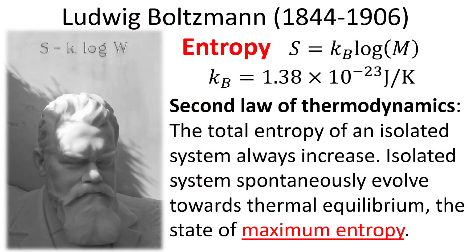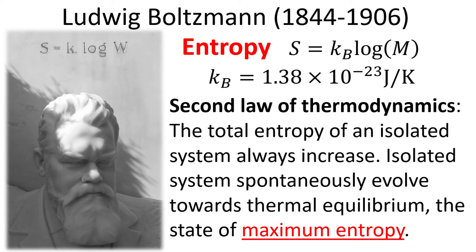In order for us to proceed to the next step, we need to first borrow an equation from Ludwig Boltzmann's tombstone. Here, the entropy S has a definition in terms of the number of microstates, given by k sub B, the Boltzmann constant multiplied by the natural log of the system multiplicity M. An important insight by Boltzmann into the second law of thermodynamics is the realization that isolated systems spontaneously evolve towards thermal equilibrium, the state of maximum entropy.